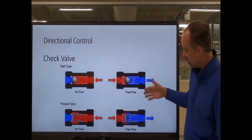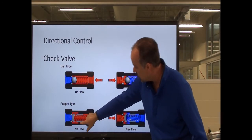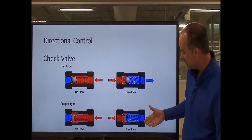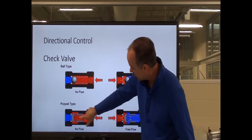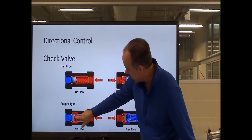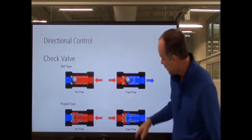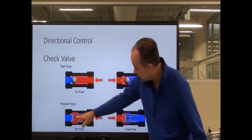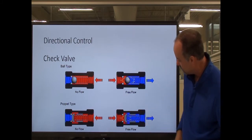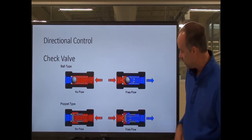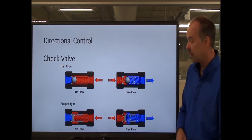The difference between a ball and a poppet type: with a poppet, you've got a different shaped type of valve. It performs the same function. I've got a spring and the poppet actually creates a seal through the orifice. When I push fluid one way, it seals it off, and fluid coming back the other way will push that poppet back off of its seat and allow fluid to flow. Just a different design, but it performs the same function.